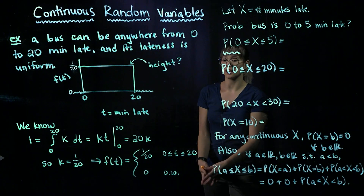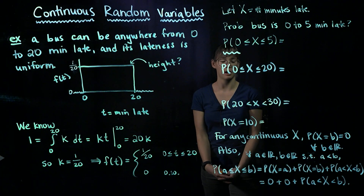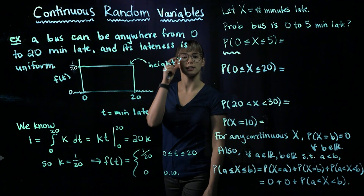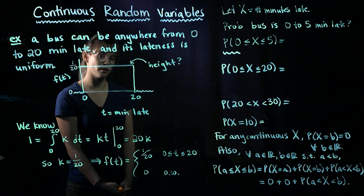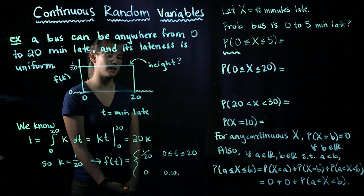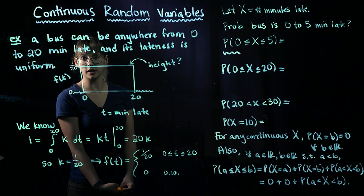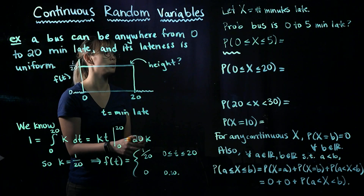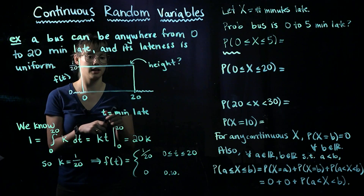Now we can use this PDF to calculate some probabilities. Let's define x, our random variable, to be the number of minutes the bus is late. First, let's figure out the probability that the bus is between 0 and 5 minutes late.